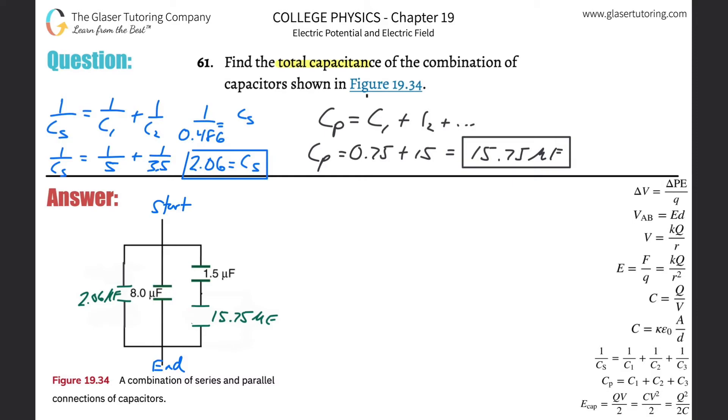Now it's starting to really look close to a simple thing, but I realize I've got parallel, parallel, and then series within a parallel. What can we combine next? Combine this into a nice series arrangement. It's going to be one over the total capacitance in series equals one over the first capacitor plus one over the second. One over 1.5 plus one over 15.75.